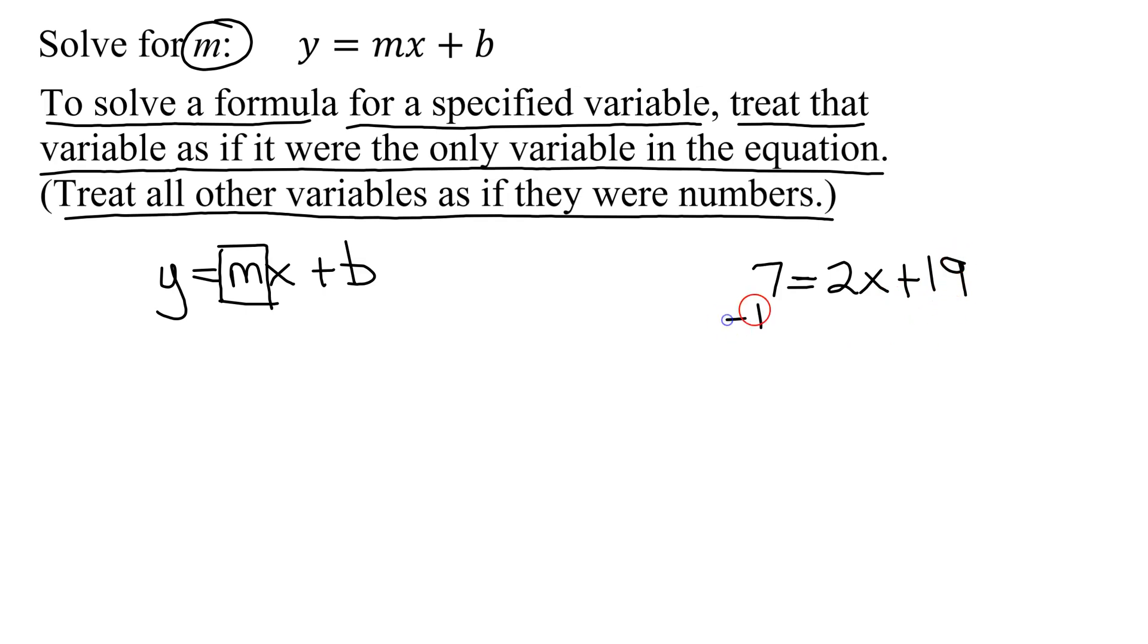Well, you'd subtract 19 from both sides. And you get 7 minus 19 is negative 12 equals 2x.